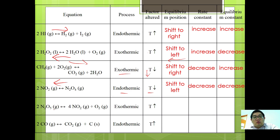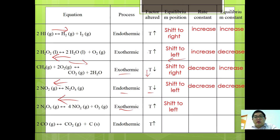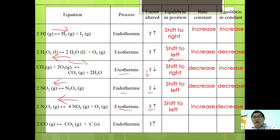For N2O5 gives 4NO2 plus O2, the forward reaction is exothermic. Exothermic forward reaction means equilibrium will shift toward the endothermic direction, which is the backward reaction, so equilibrium shifts to the left. As temperature increases, the rate constant increases; however, as equilibrium shifts left, products decrease and reactants increase, so the equilibrium constant decreases.